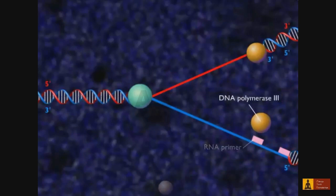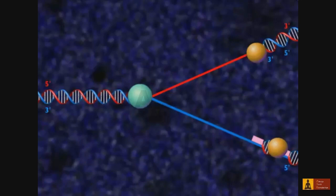DNA polymerase 3 then adds deoxyribonucleotides to the 3' end of the RNA primer.